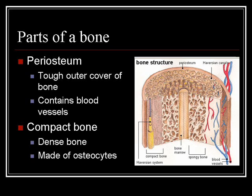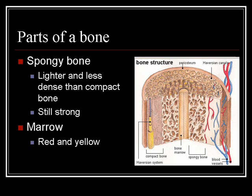Continuing to work our way to the inner core of the bone, the next layer is compact bone. You can see from the diagram that it's a really dense bone just inside underneath the periosteum. It's very strong, and it's made of osteocytes — 'osteo' meaning bone, and 'cytes' meaning cell. Continuing to work your way inside the bone, the next layer is the spongy bone. As you can see, it kind of has the appearance of a kitchen sponge. However, it is not soft and squishy — it's actually quite strong.